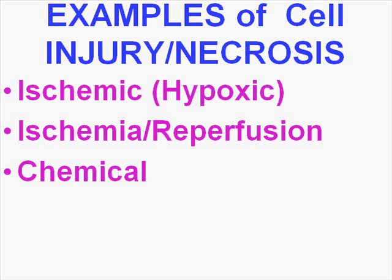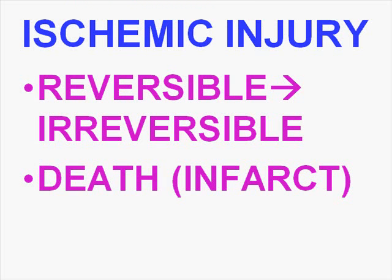You can also have a chemical type of injury. A chemical injury can be direct by virtue of it being toxic, or it could be indirect if the chemical is converted into a toxic metabolite. An ischemic injury could be reversible, but once it's at the point where there is cell death, that's irreversible, and dead tissue due to irreversible ischemic changes is called an infarct.